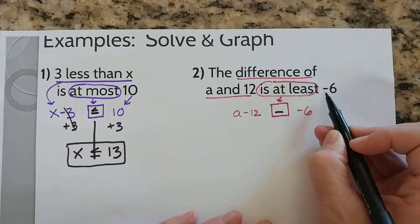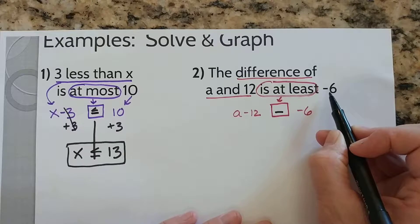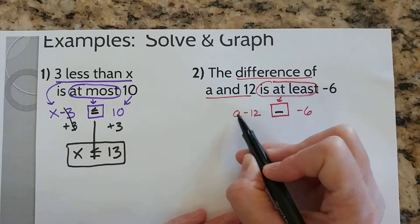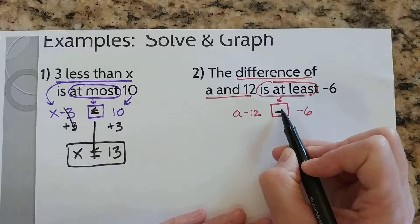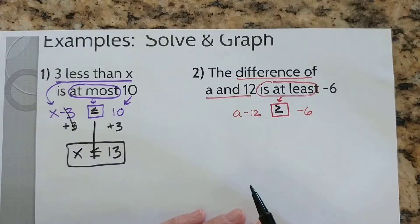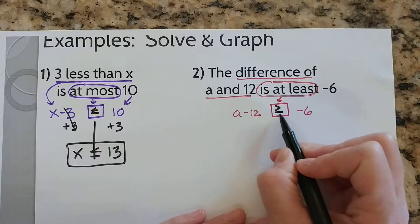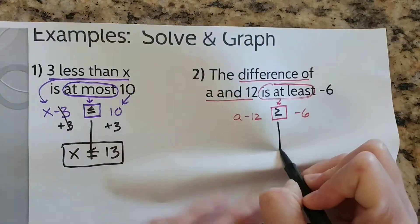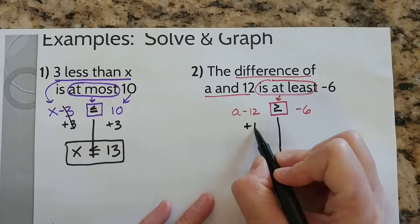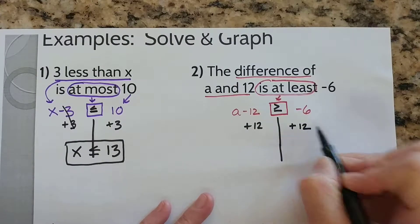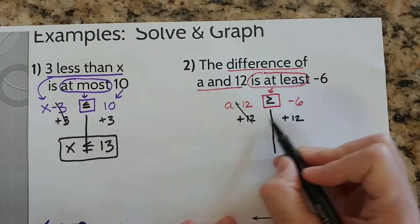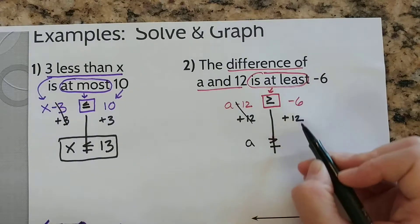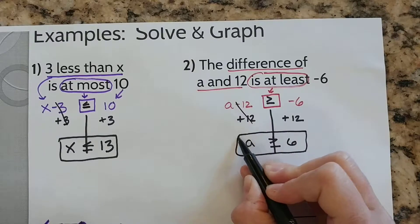So if it's at least negative 6 — that's the very least — it can't be any less than that, which means it could be more than that. Since it's at least negative 6, it can't be less than that, so it would have to be greater than. So the difference of a and 12 is greater than or equal to negative 6. Let's solve it. Adding 12 to both sides — we know that when we add a number to both sides of an inequality it remains true. Negative 6 plus 12 — and there's my set of solutions.